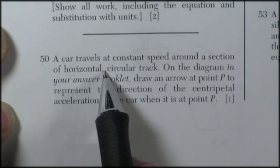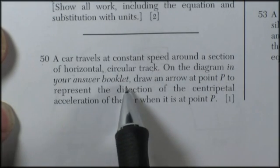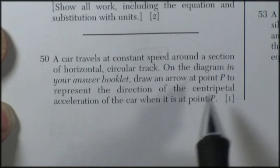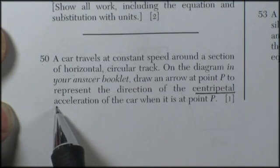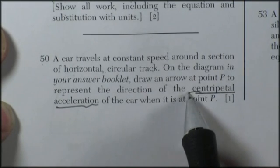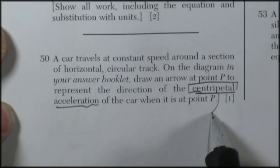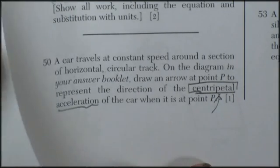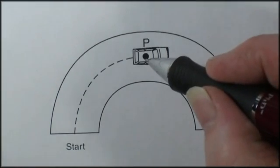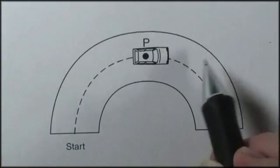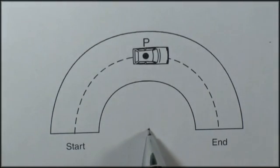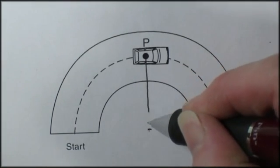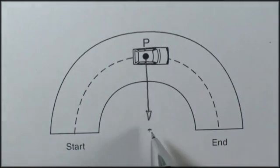So it's a horizontal circular track. On the diagram in your answer booklet, draw an arrow at point P to represent the direction of the centripetal acceleration. Well, the word centripetal means center seeking, towards the center. So this should be easy. If the car is at point P going around a curve, then this would be the center. So the centripetal acceleration would be towards the center of the curve.